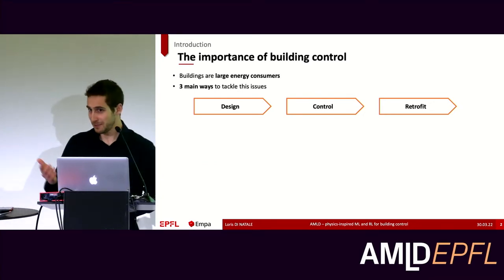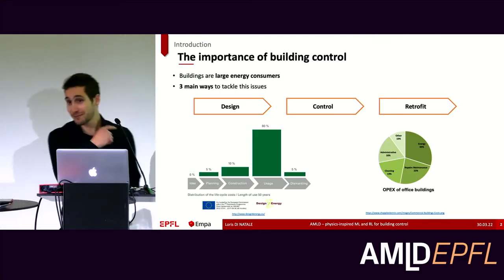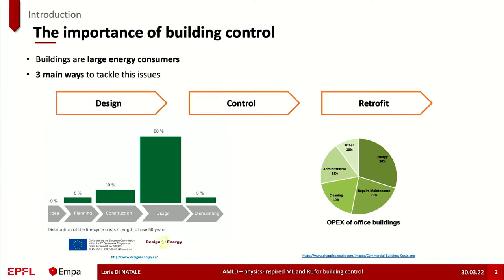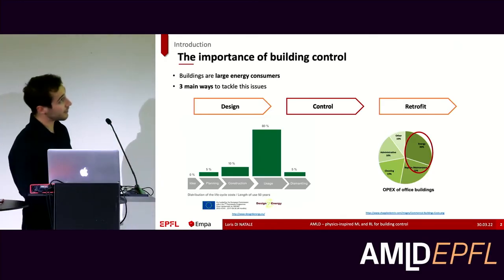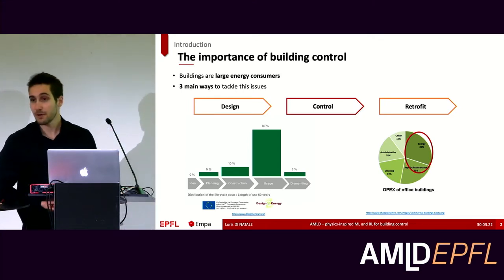If the sustainability argument is not enough, you can also look at the cost of a building. A lot of costs happen during the usage of the building, and a big chunk of it is actually energy. So by decreasing energy consumption, we also improve costs and allow people to save money. In this talk, I will focus on control applications.